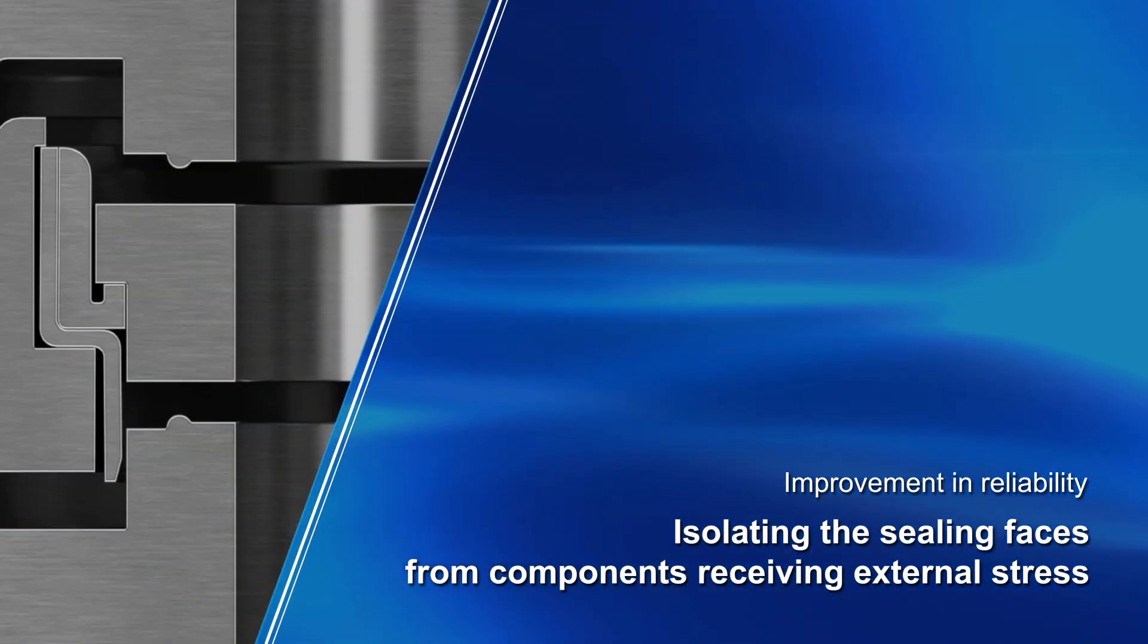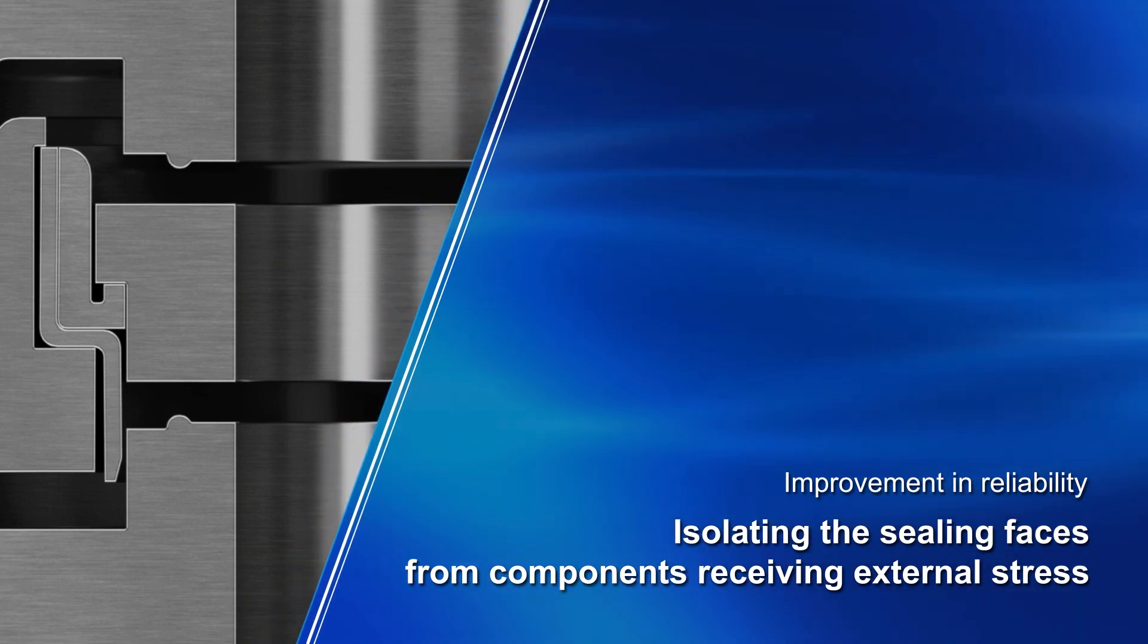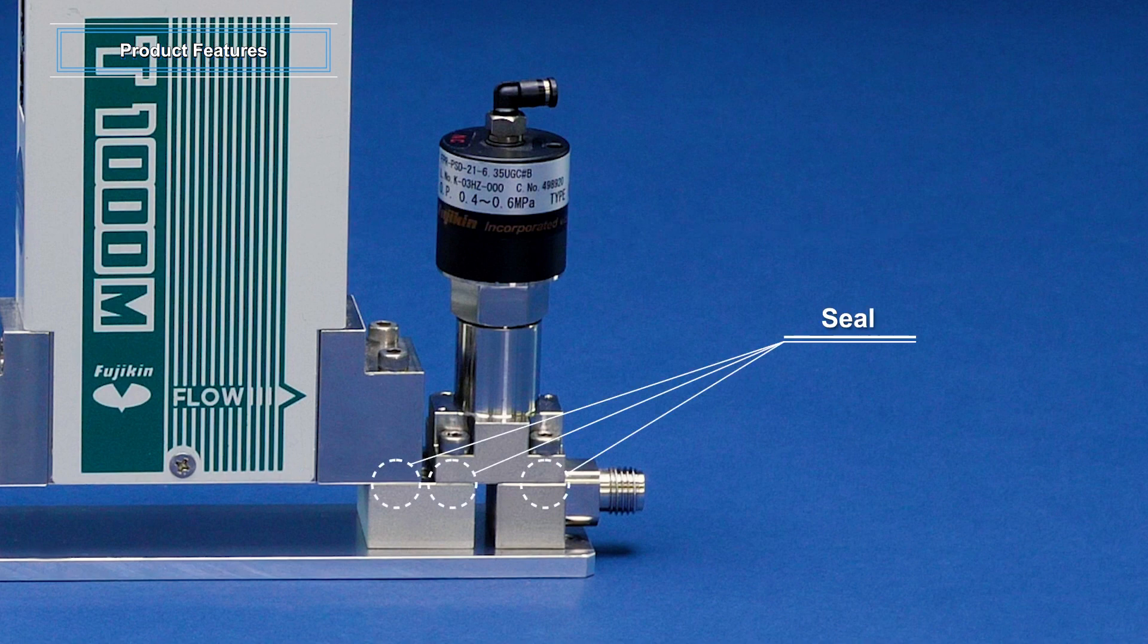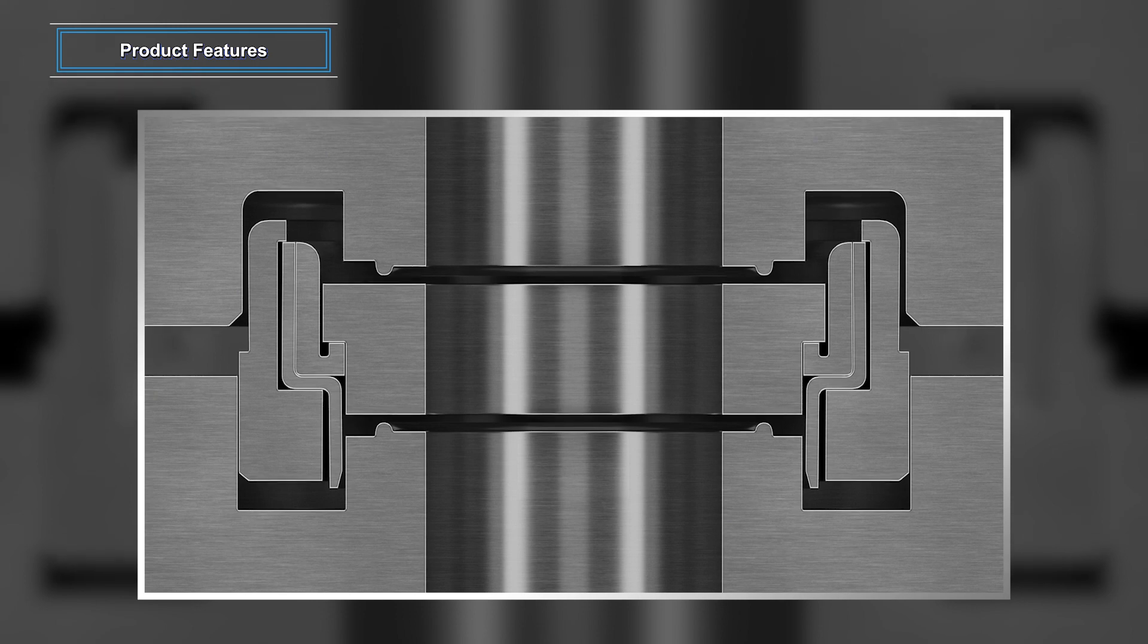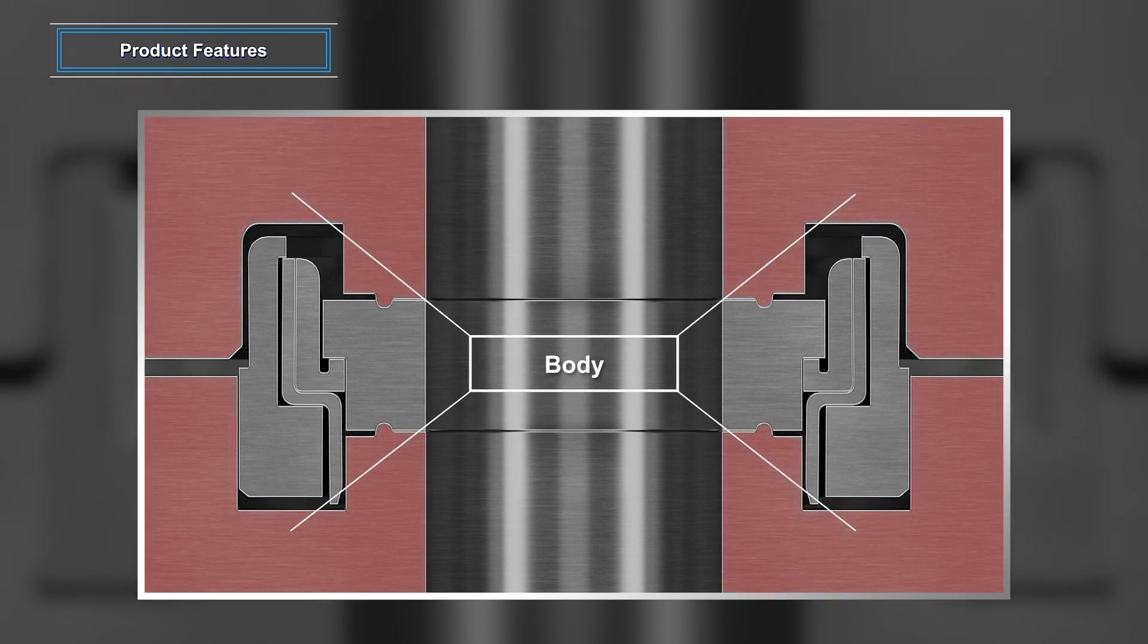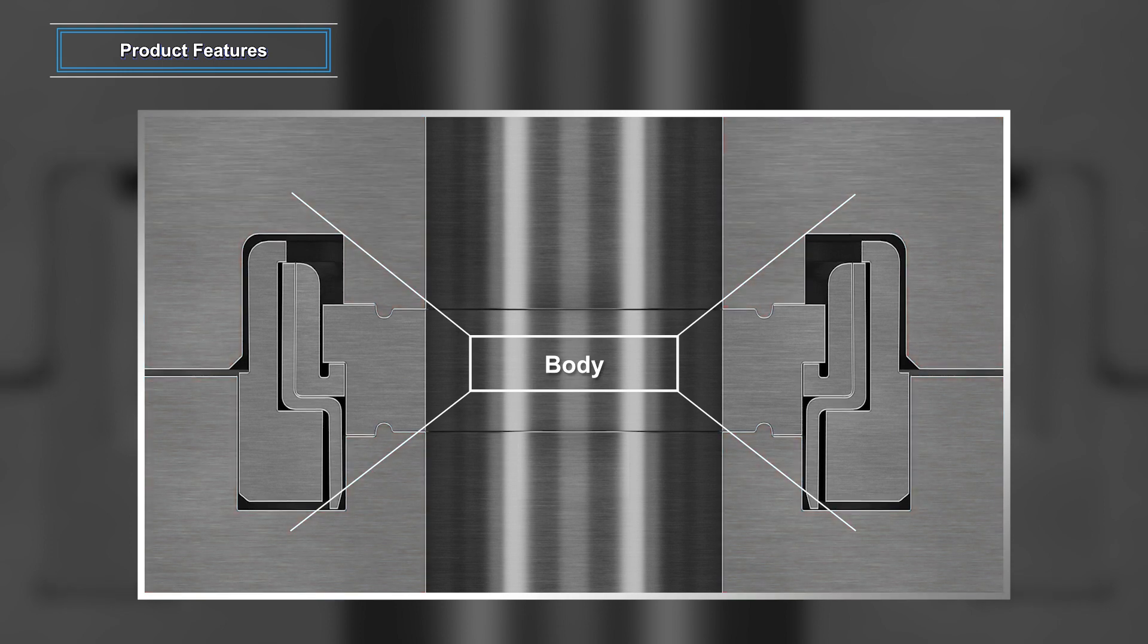Improvement in Reliability: Isolating the sealing faces from components receiving external stress. IGS has a strong structure against external stresses. It is not the external surface of the seal, but the entire body surface that receives the stress. Therefore, the seal is not affected whatsoever.